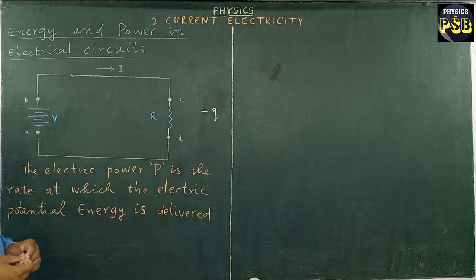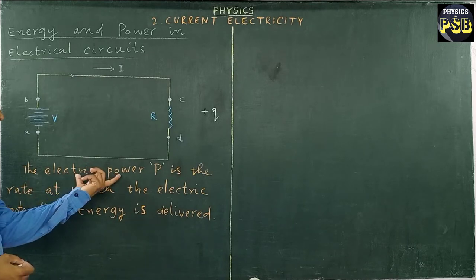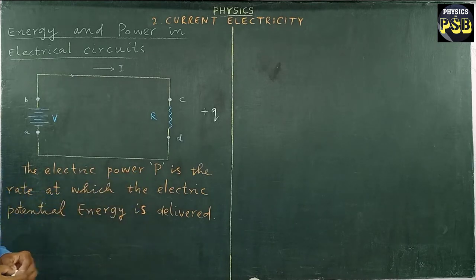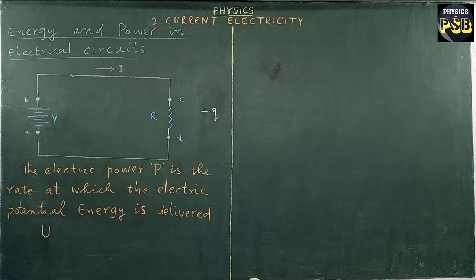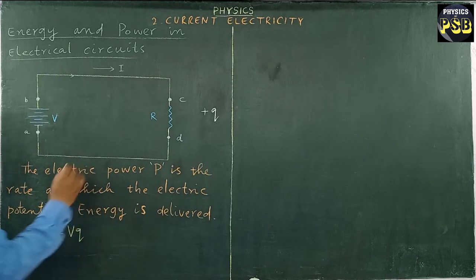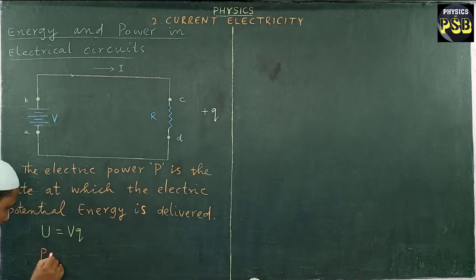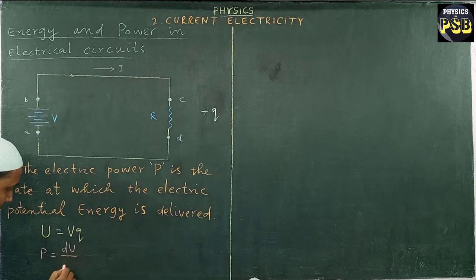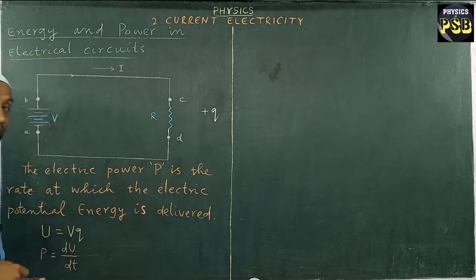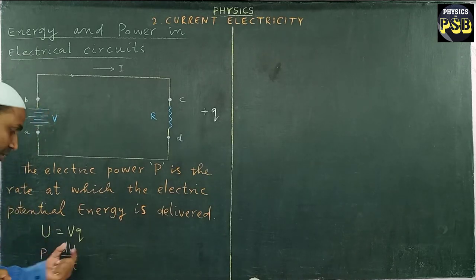The rate at which electric potential energy is consumed or delivered is referred to as electric power, represented by the letter P. Electric potential energy is denoted by letter U, which is the product of electric potential V and charge Q. Electric power P is nothing but the rate of electric potential energy — when we divide quantity by time we get a rate, so dU/dt is the rate of change of electric potential energy.